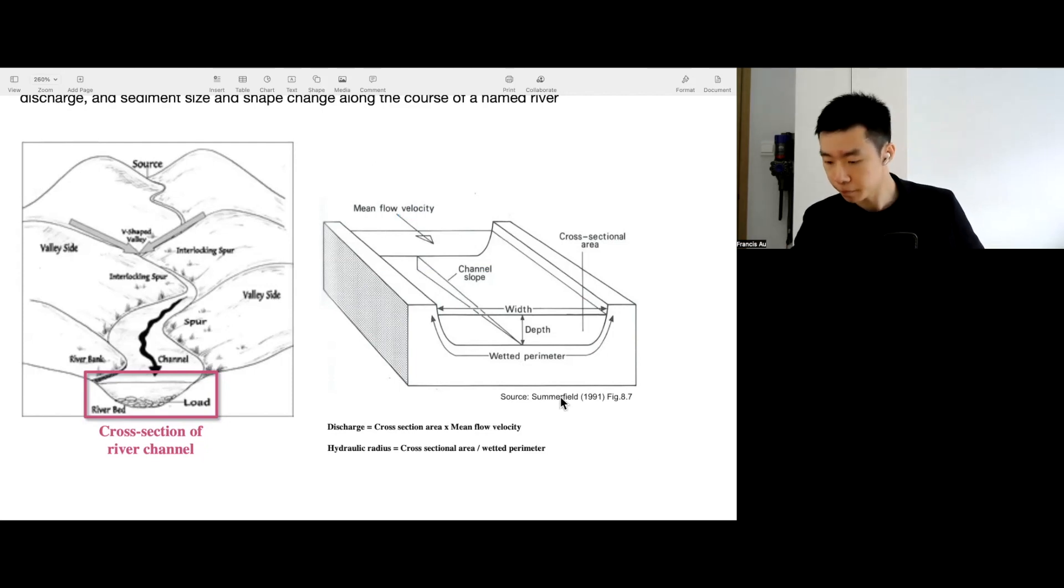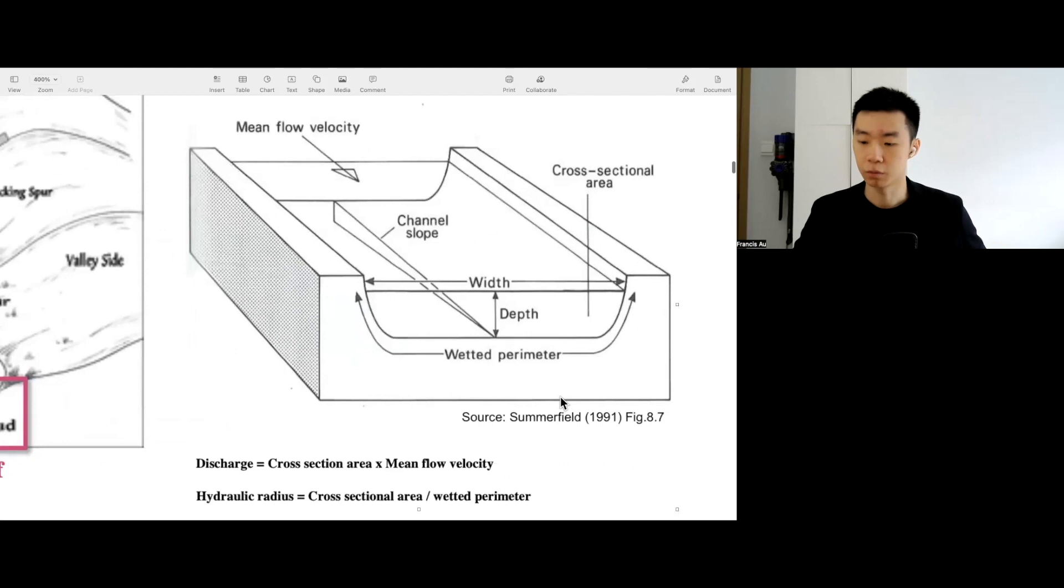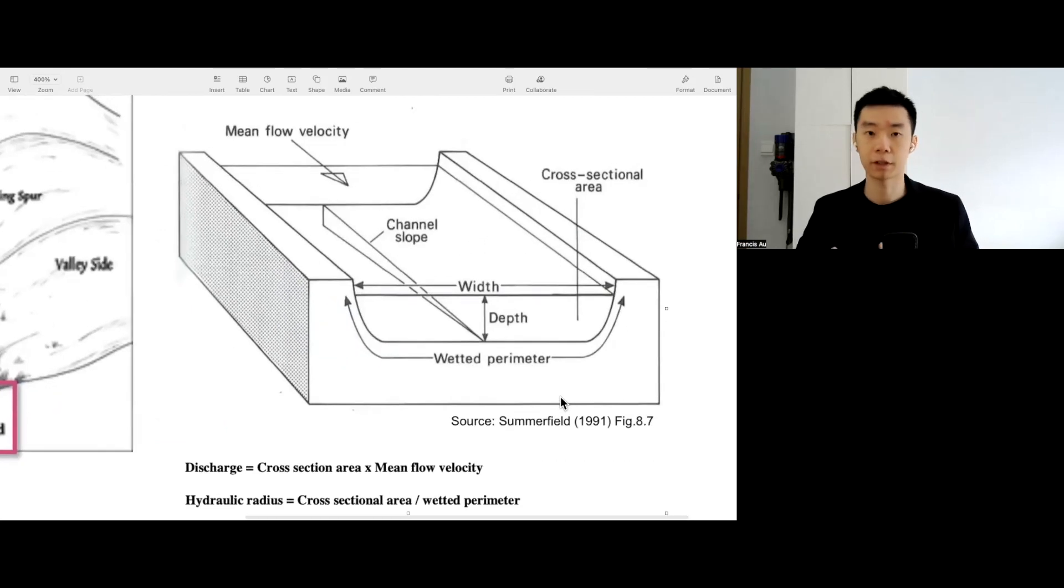So let's take a look. For discharge, we say that the width of discharge is like the amount of vehicles going through a cross-harbour tunnel.